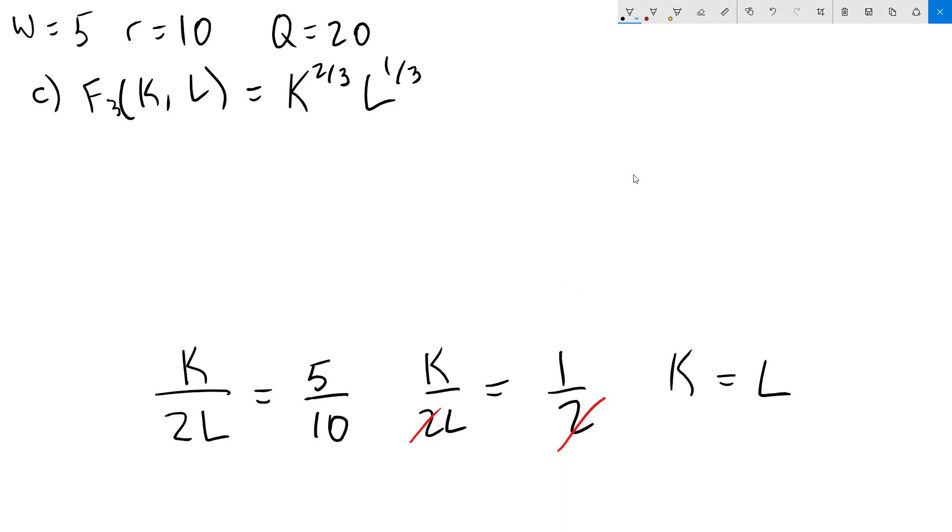Next, we need to actually solve for k and L. Since our target output is 20, we have to set our production function, k to the 2 thirds, L to the 1 third, equal to 20. Since we already figured out that k equals L, we can now use substitution here. So anywhere I see a k, I can simply substitute in an L. So I'll get L to the 2 thirds times L to the 1 third equals 20. L to the 2 thirds times L to the 1 third is L, so we have L equals 20. And since k equals L, k also equals 20.